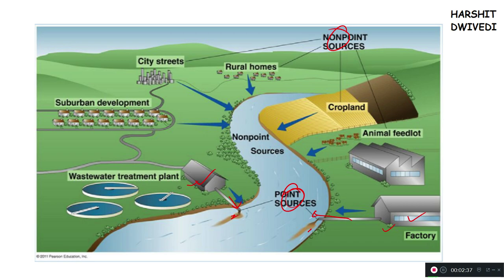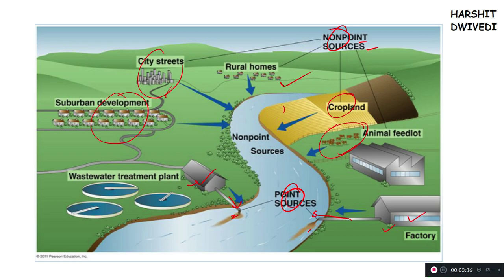When we don't know from exactly what points the pollution is occurring, they become non-point sources. Non-point sources are those sources of water pollution where we are not able to predict or say 100% where that pollution will come from. For example, city streets discharge a lot of pollutants through many channels over a large area, so you cannot fix one point. The same goes for suburban development, rural homes, cropland, and livestock areas — one specific point source is not known, and that is why they become non-point sources.